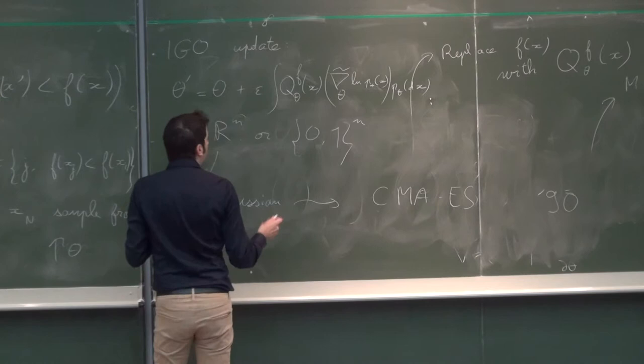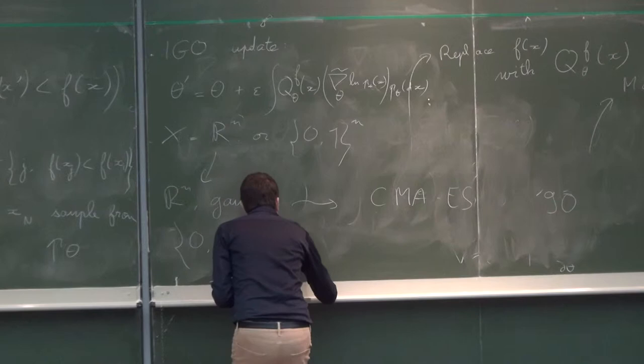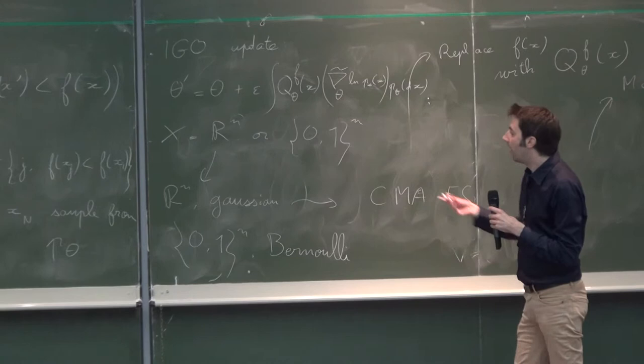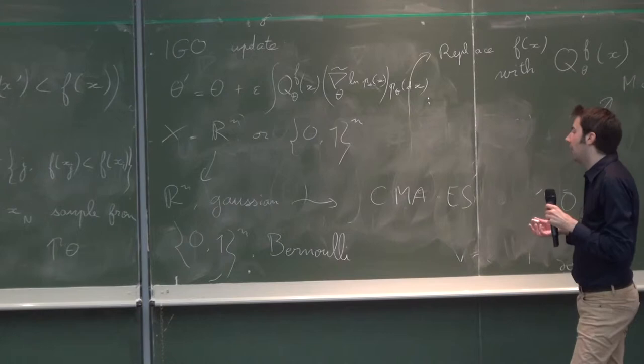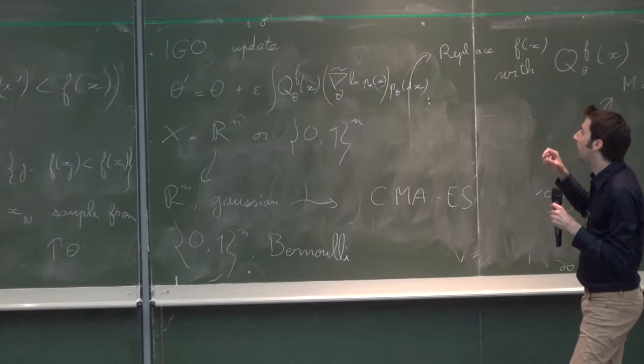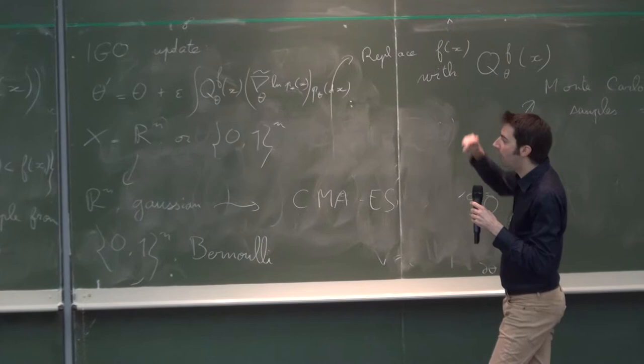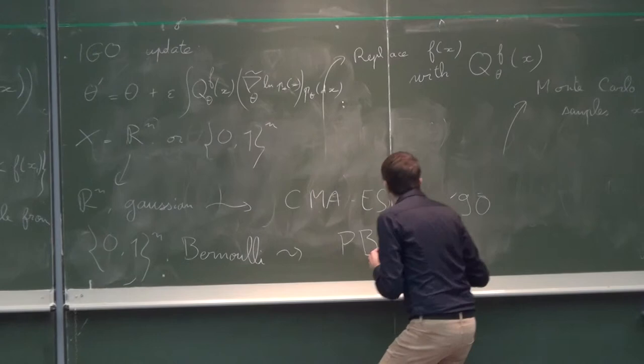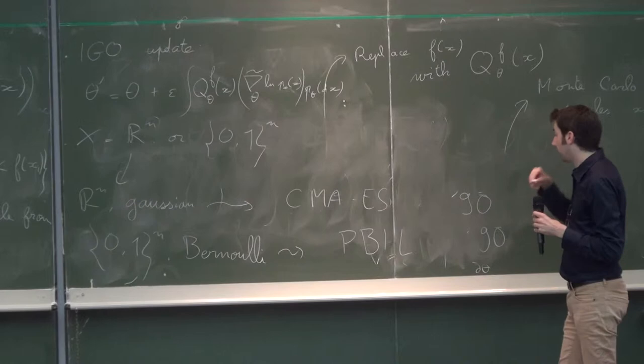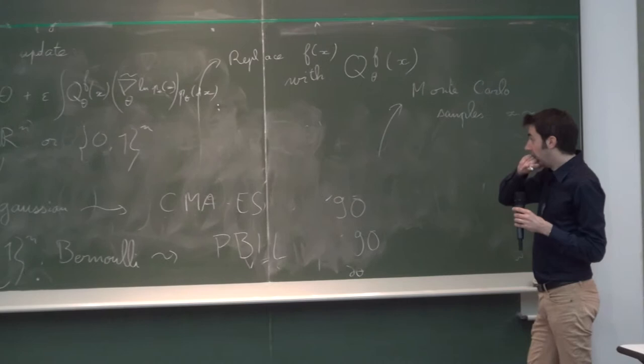And for Bernoulli distribution on the discrete cube search space, where the parameter theta is the probability to have the given bit set to 0 or 1, you get an algorithm known as PBIL, Population-Based Incremental Learning, which was also defined in the 90s, I guess, by various people actually.